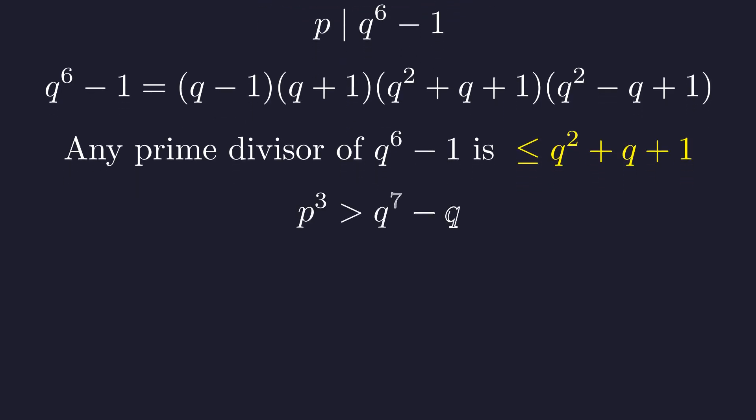From our original equation, p cubed minus p equals q to the 7th minus q, we can deduce that p cubed is greater than q to the 7th minus q, since p is positive.